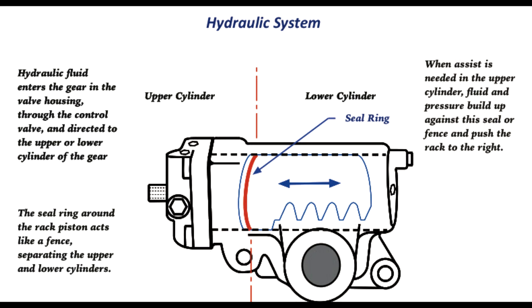When assist is needed in the upper cylinder of the gear, the control valve directs fluid into that chamber. Pressure then builds up against the seal around the rack piston. That pressure provides the hydraulic assist needed to push the rack piston to the right.